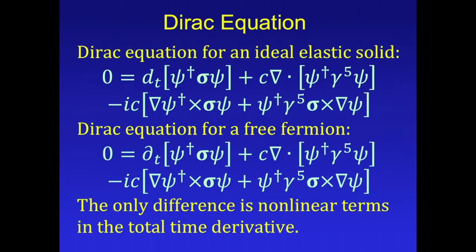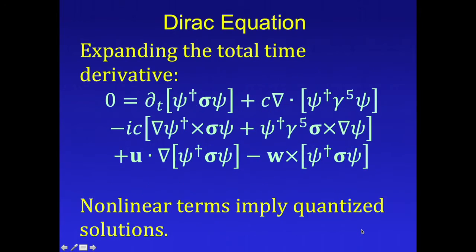If we compare the Dirac equation for an ideal elastic solid, shown on the top, with the Dirac equation for a free fermion, such as a free electron, which is the equation on the bottom, the only difference is the nonlinear terms inside of the total time derivative. And if we expand the total time derivative, these nonlinear terms are shown on the bottom here. These imply the existence of quantized solutions.